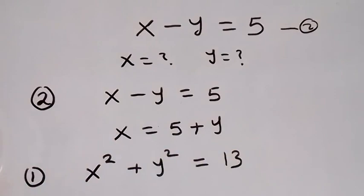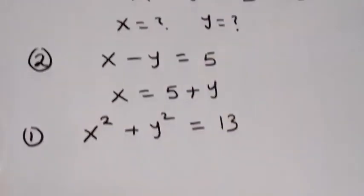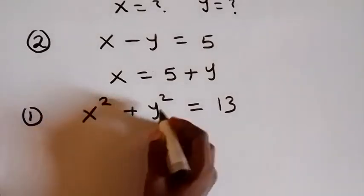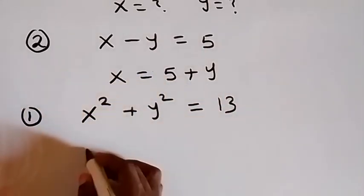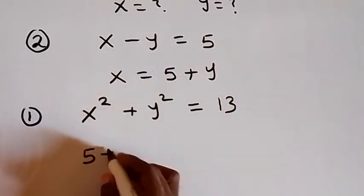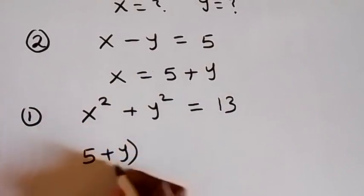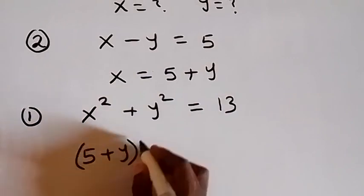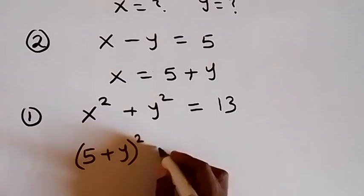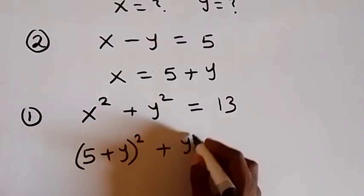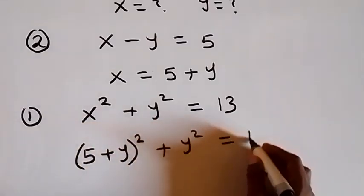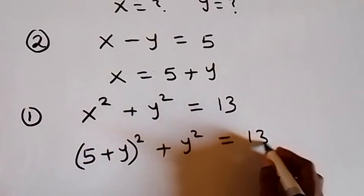And let's substitute this back here now. This becomes x, which is now 5 plus y. So we have 5 plus y, that quantity squared, then plus y squared, now equals to 13.